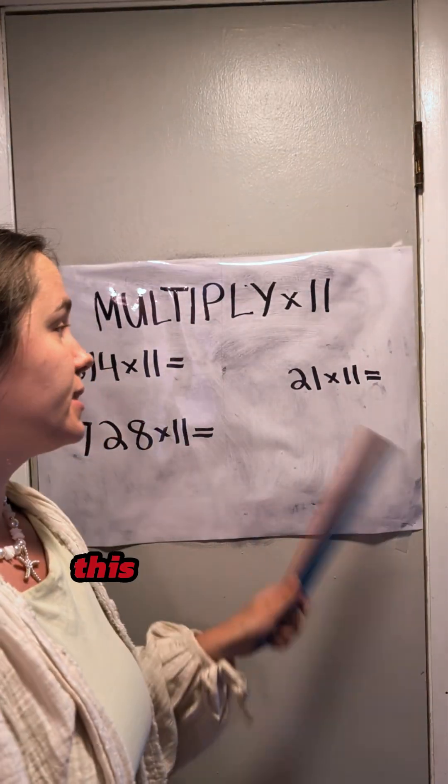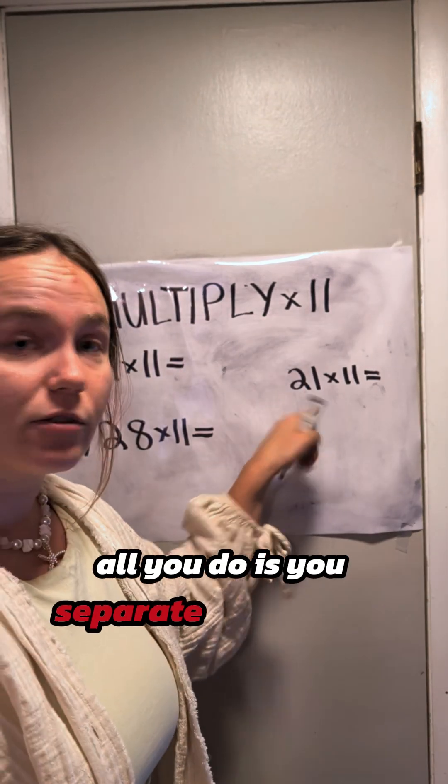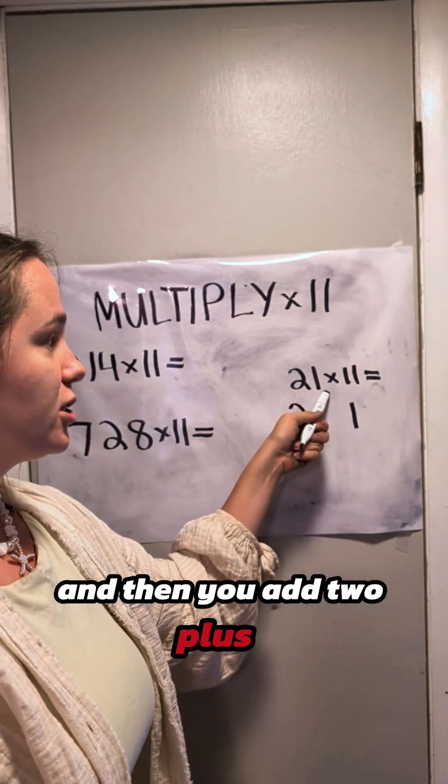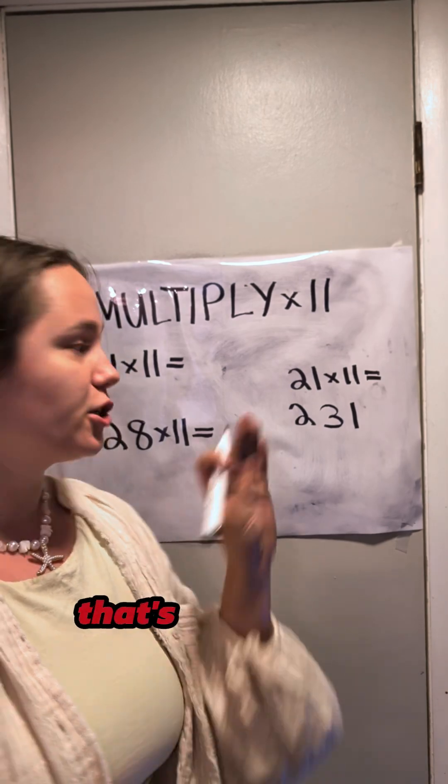Now, just as a refresher, this is how it works with double-digit numbers. All you do is you separate the 2 and the 1, and then you add 2 plus 1, which is 3, 231. That's your answer.